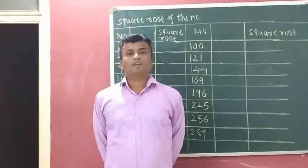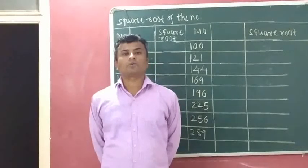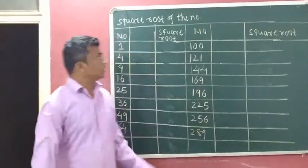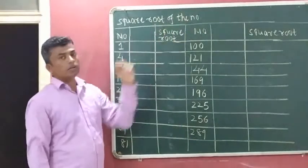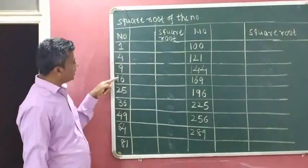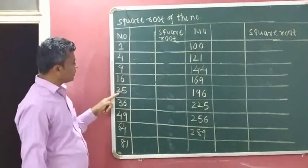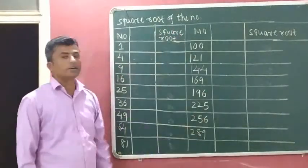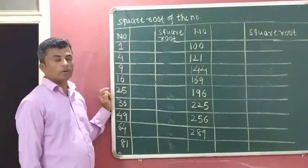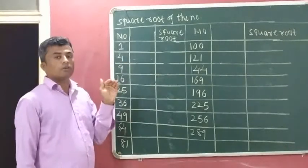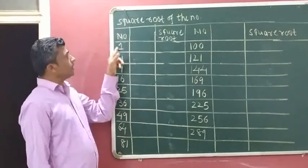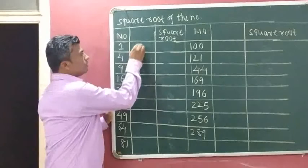Now we will discuss identifying the square root of numbers using the normal method. We have to identify the square root of numbers from 1 to 289. First, the square root of 1: which two same digits we can multiply to get 1? 1 times 1 is 1, so the square root of 1 is 1.